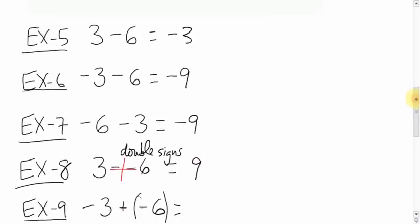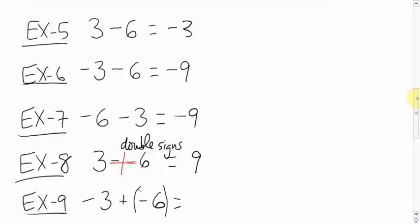Okay. What about this? Negative three plus, in brackets, negative six. Now, what's the deal with the brackets? I put them there, but I didn't have to. I could leave like that if I wanted to.